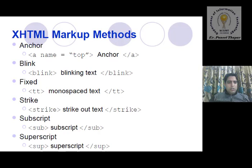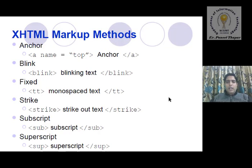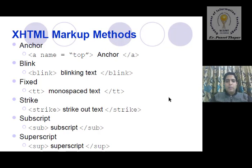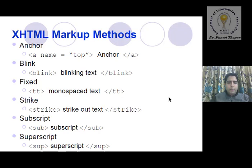Welcome back everyone. Today's topic is HTML markup methods — what are the XHTML markup methods used by JavaScript. You can see anchor, blink, fixed, strike, subscript, and superscript are some HTML markup methods adopted by JavaScript. In the previous topic we discussed searching methodologies, substring, and split text evaluation with JavaScript objects. Today we will discuss XHTML markup methods.